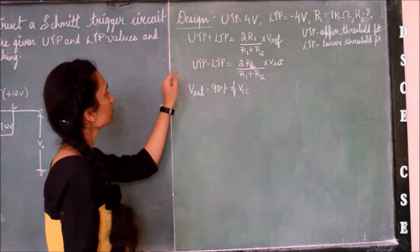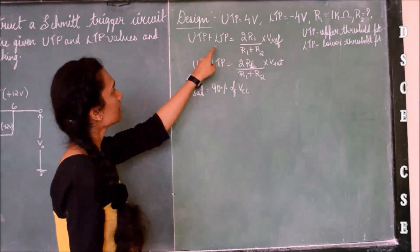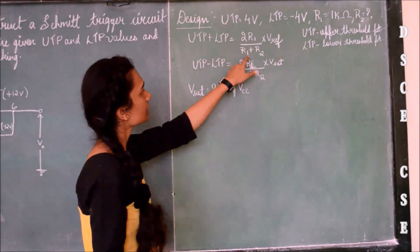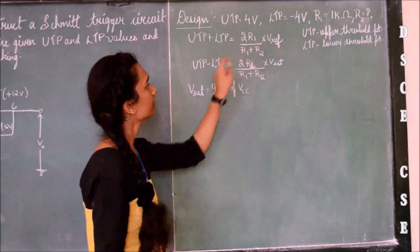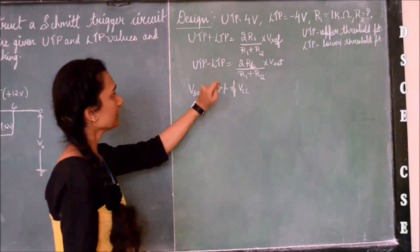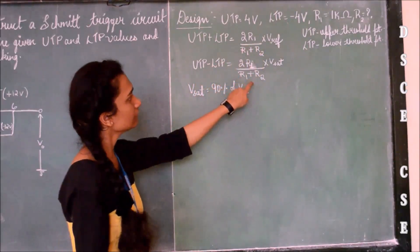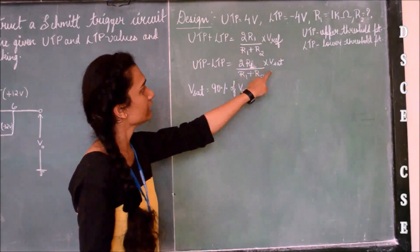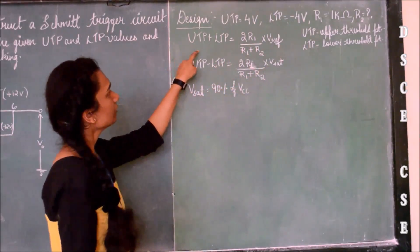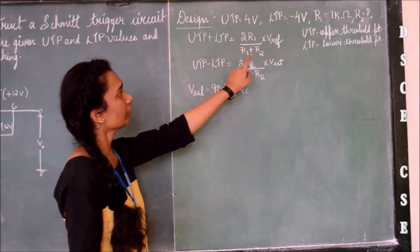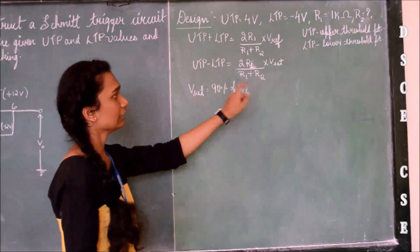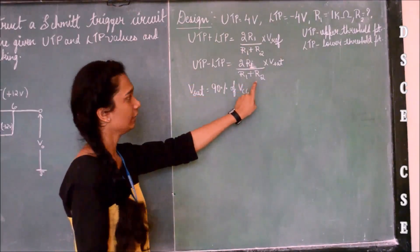The formulas are as follows. UTP plus LTP equals 2R1 divided by (R1 plus R2) multiplied by V reference. UTP minus LTP equals 2R1 divided by (R1 plus R2) multiplied by Vsat. Using these formulas we will calculate the value of V reference and the value of R2.